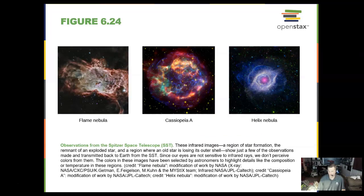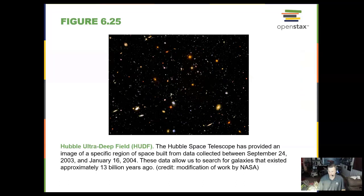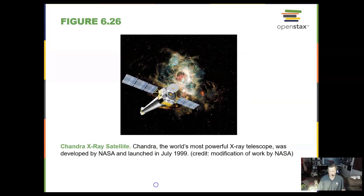The Spitzer Space Telescope does infrared images like these. And then we have the Hubble Ultra Deep Field — this is an area of space that we can go back into 13 billion years ago when it was formed, by looking back into time.